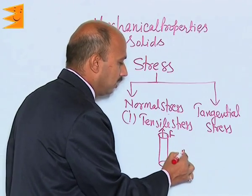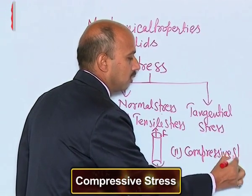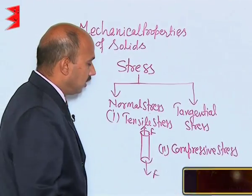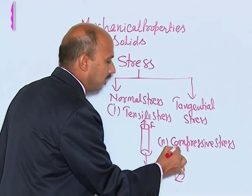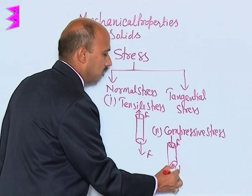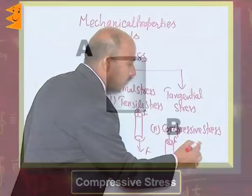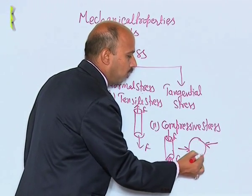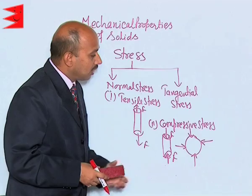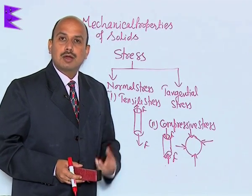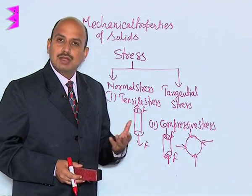The second type of normal stress is compressive stress. Suppose you have a cylinder and you apply force such that there is a decrease in length. Another example: if you apply force from all sides, there is a decrease in its volume. This type of force per unit area is known as compressive stress. All these stresses have the same unit: Newton per meter square.